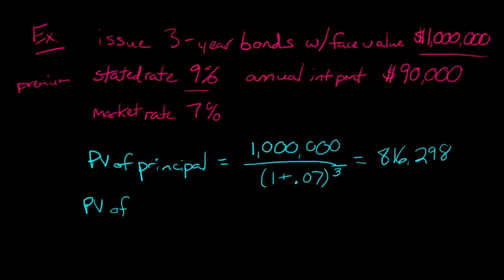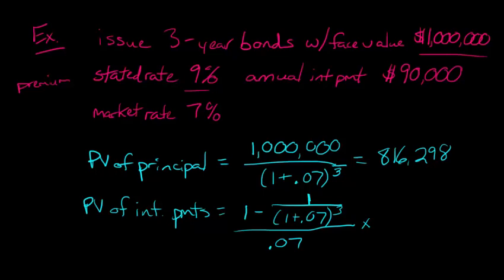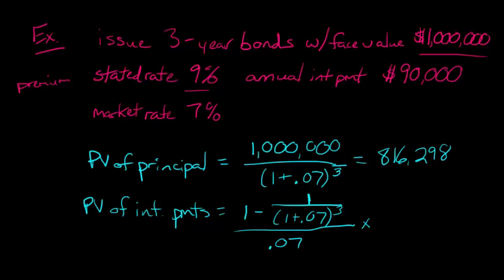Now we have to calculate the present value of the interest payments. This formula is the present value of an ordinary annuity. We use 1.07 to the third power in the numerator (with 1), and the market interest rate — not the stated rate — in the denominator, multiplied by the actual cash interest payment of $90,000. Every year we're making an interest payment of $90,000, and the present value of those three payments gives us $236,188.